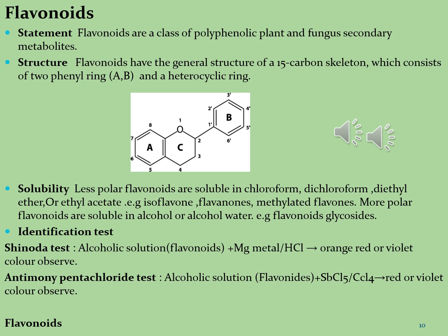Flavonoids are abundant in plants, where they perform several functions. They are pigments for producing the colors needed to attract pollinating insects. In higher plants, flavonoids are also required for UV filtration, nitrogen fixation, cell cycle inhibition, and as chemical messengers. Flavonoids are secreted by plant roots in a symbiotic relationship between rhizobia and certain vegetables such as peas, clover, and beans.